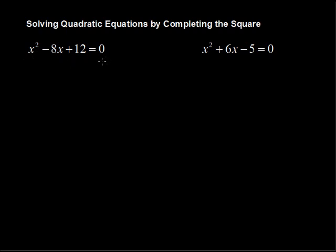The first thing you want to do when you're completing the square is to get all of the constant terms on the right-hand side. These examples start with equaling 0 on the right-hand side, but you might have equals 5 or whatever on the right-hand side. So we need to subtract 12 from each side. We get x squared minus 8x, I'm going to leave a space here, equals negative 12. I subtracted 12 from each side to get it away from the left-hand side.